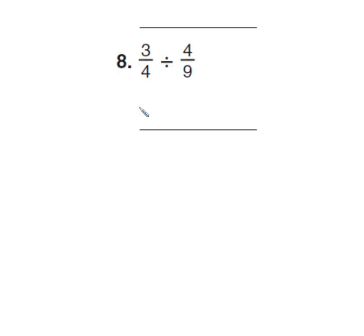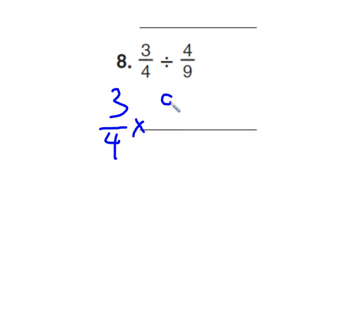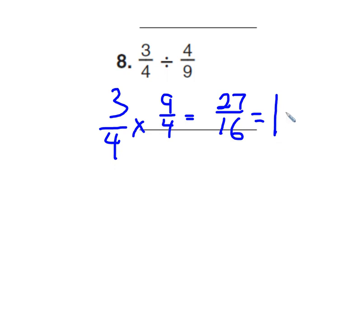Now they get some tougher problems. We're going to rewrite 3/4 divided into groups of 4/9. Mathematically that's a challenge, but multiplying fractions is no big problem. So: 3/4 times 9/4 — change division to multiplication, then invert the fraction. That gives 27/16, and 27 divided by 16 goes 1 with 11 left over, so the answer is 1 and 11/16.